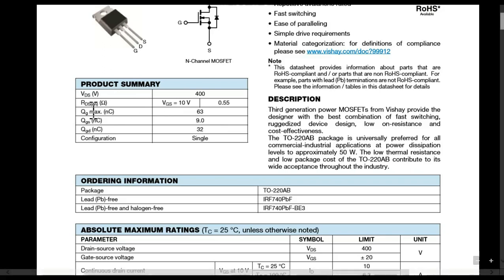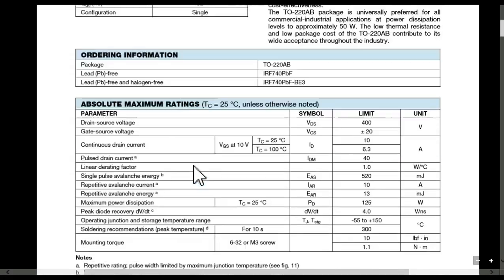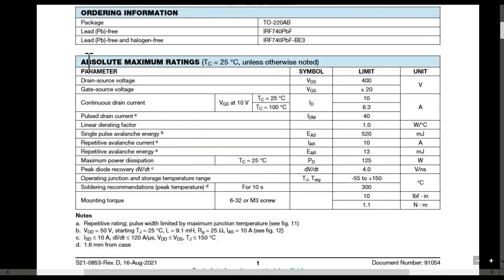Now you see the QG value — gate charge, gate-source charge, and drain-gate charge. This is the absolute maximum rating section, defined at 25 degrees centigrade. You need to be very careful while selecting your MOSFET since these parameters are defined at 25 degrees centigrade.